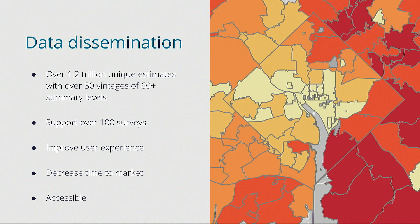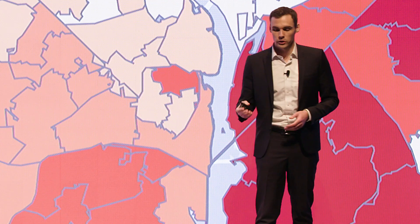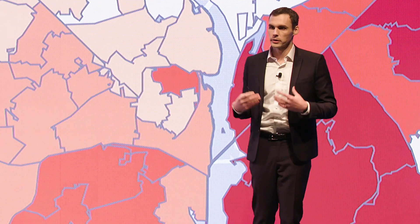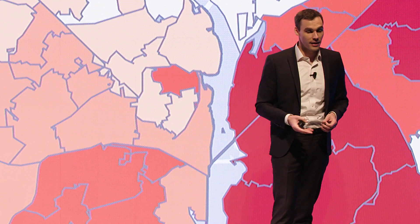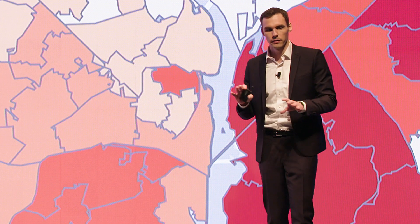The other half of it is data going out the door. After we've collected it, we have a responsibility as mandated in the Constitution to disseminate these data. Right now, our current holdings are somewhere in the range of 1.2 trillion unique estimates — that's over 30 vintages of 60-plus summary levels across 100 different surveys. We don't just do the decennial census; we have a number of different products that we need to make sure are well supported. We also understand that we have a ton of different ways that people pull data from us, and we have a number of different outlets.